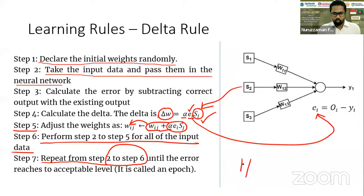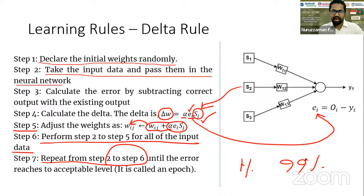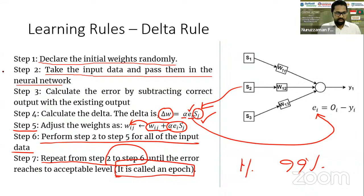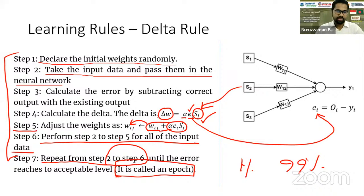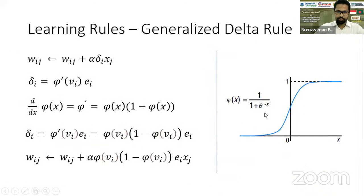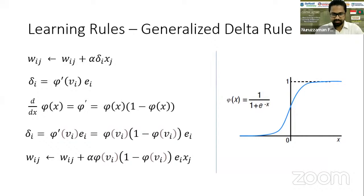This repeating of the entire process is called an epoch. An epoch means repeating steps one to six — every time we train the network using the entire dataset once, we call it one epoch. The delta rule is comparatively easier, but the bad news is we don't use the delta rule anymore. It is obsolete in practice, but it is useful for the learning process. We use the generalized delta rules instead.